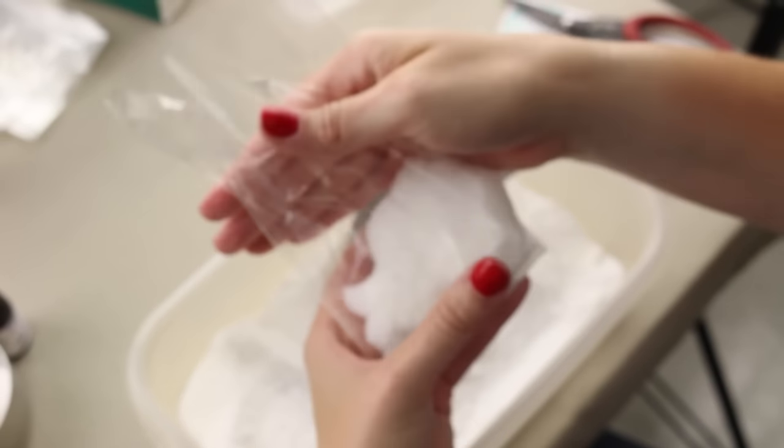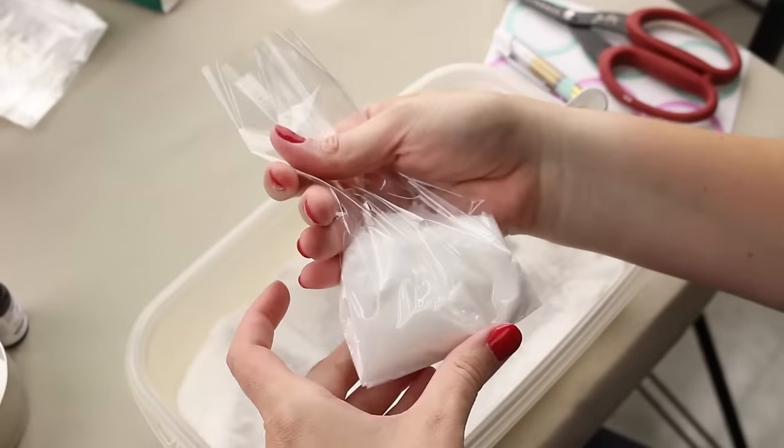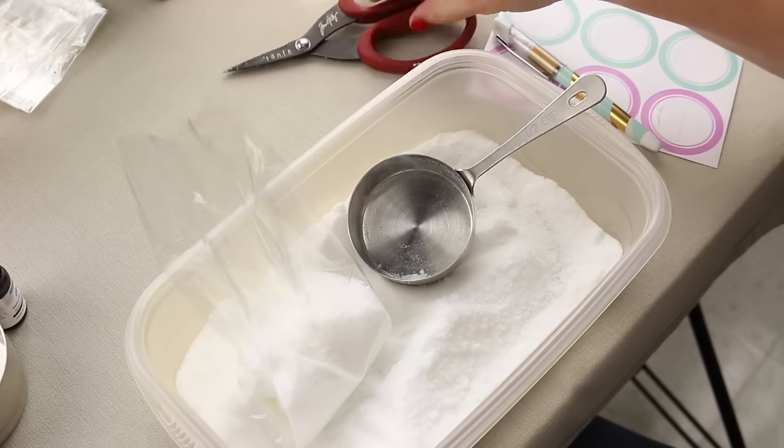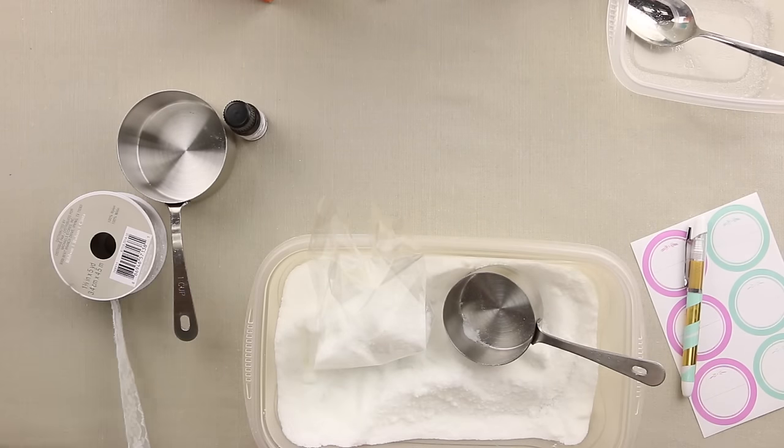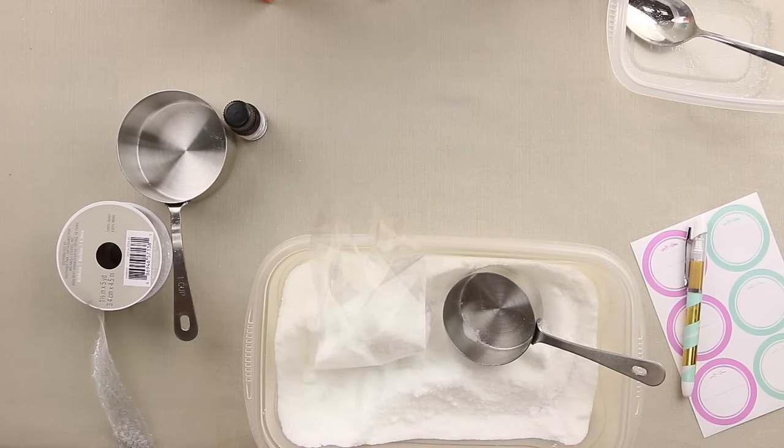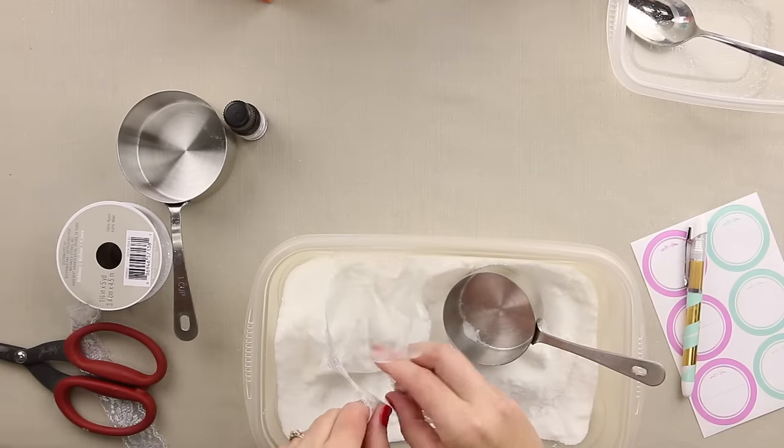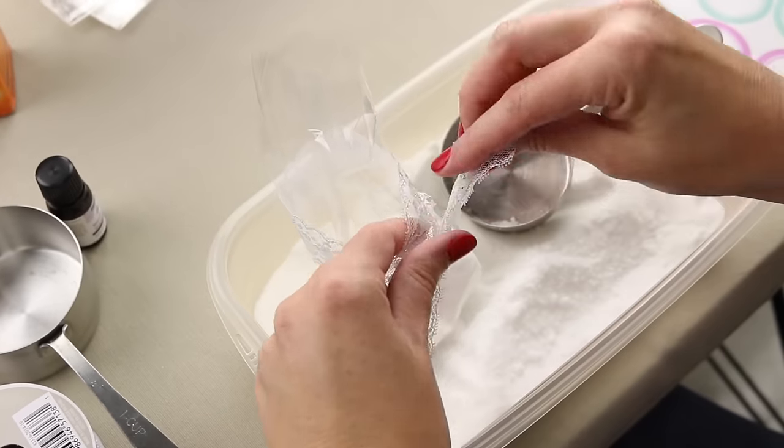And you've got a nice little fizzy bath salt set here that you can give to people. I'm going to take my ribbon and cut this off and tie it closed. And then I'm going to add a cute little label that I found.